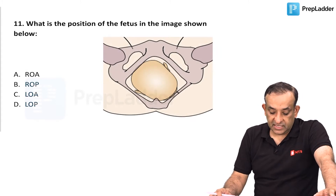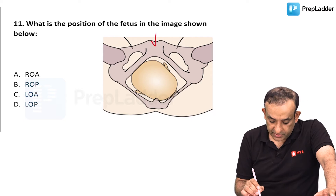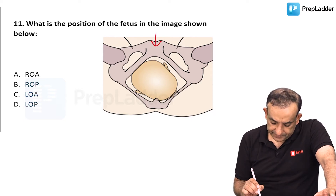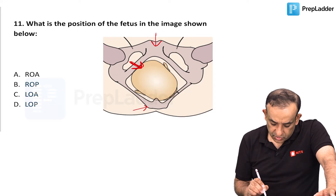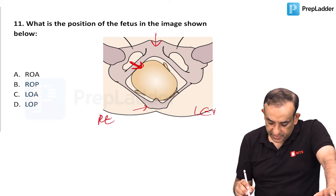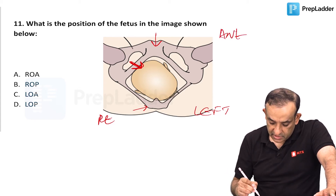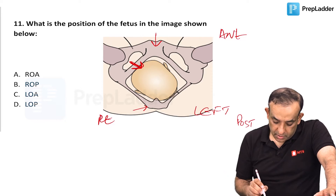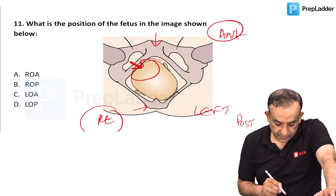Which is the position of the fetus in the image shown below? You can make out the pubic symphysis and the sacrum. The broader part of the head — the occiput — is here on the right of the patient, and this is the left of the patient. This is anterior and this is posterior. So right occipital anterior — very simple.